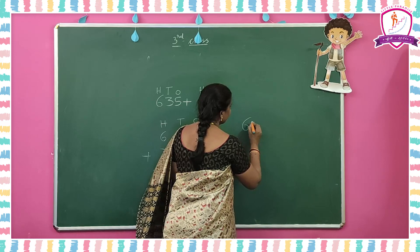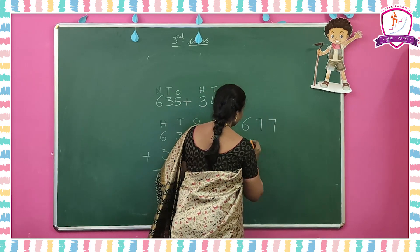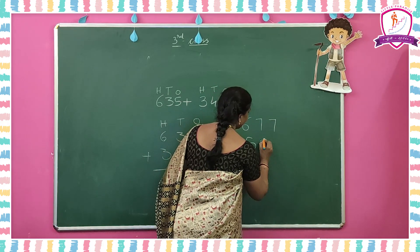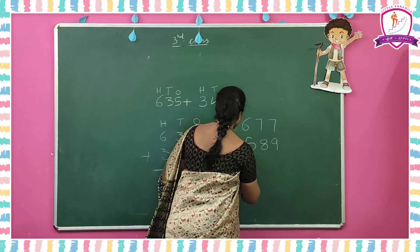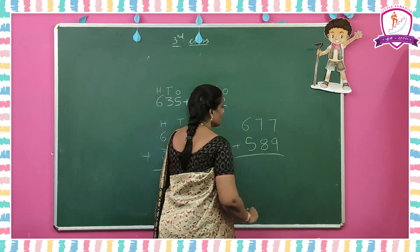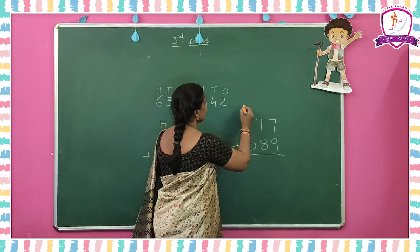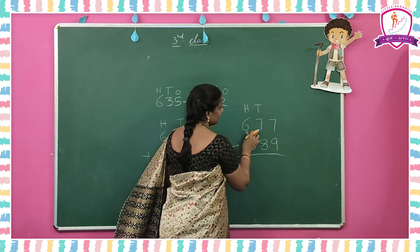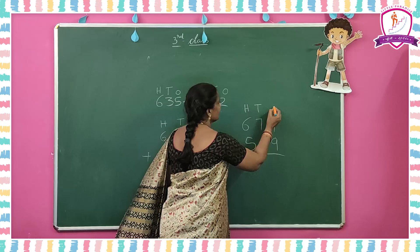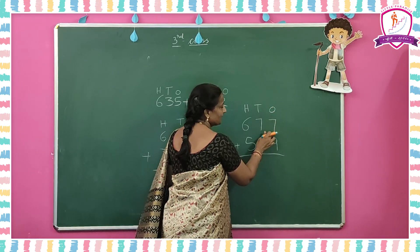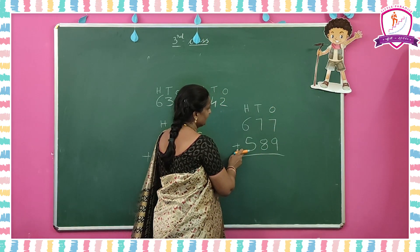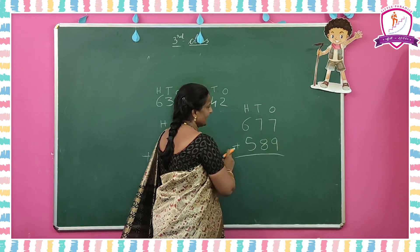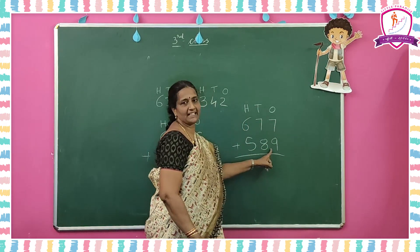Go for another example: add 677 and 589. Try to add these two numbers. This is hundreds place — 6 hundreds. Tens place — 7 tens. Ones place — 7 ones. Similarly in this number: 5 hundreds, 8 tens, 9 ones. In addition, first do the ones place.